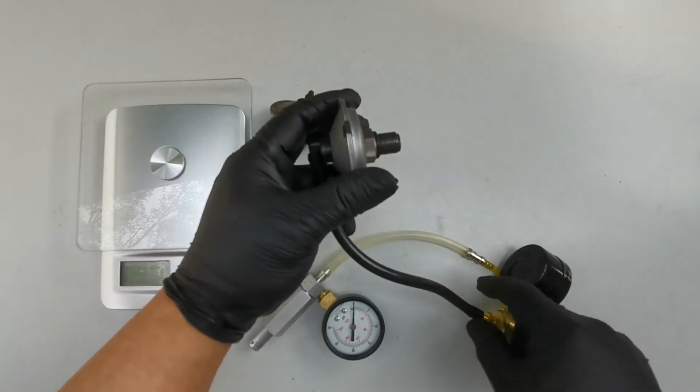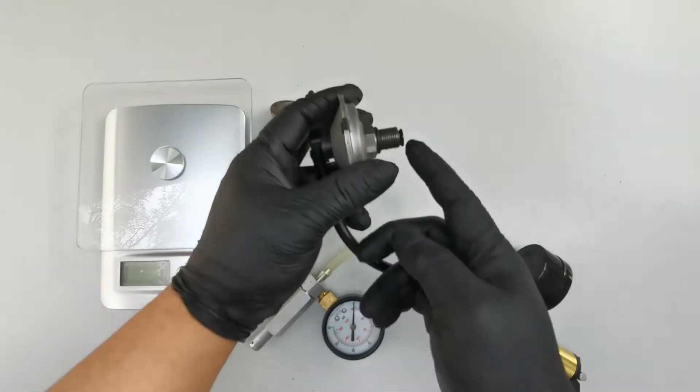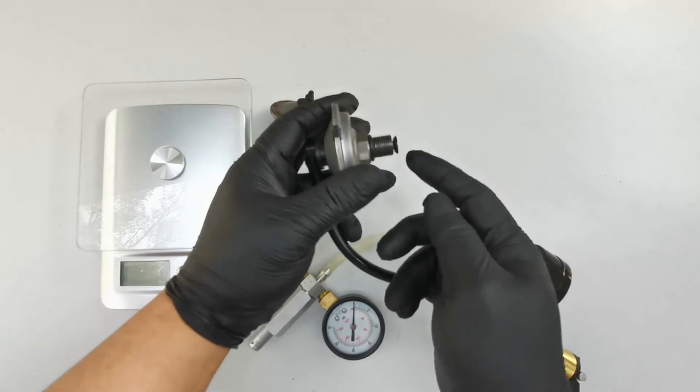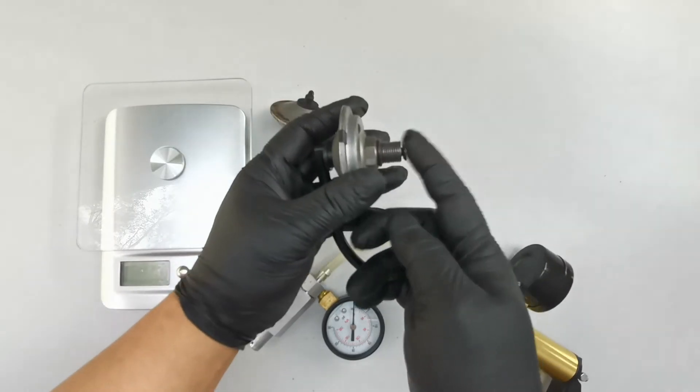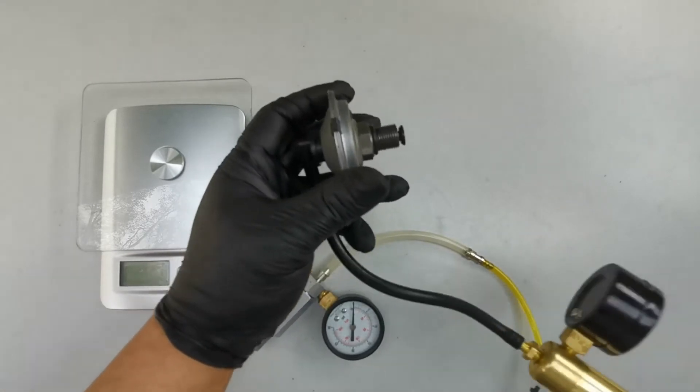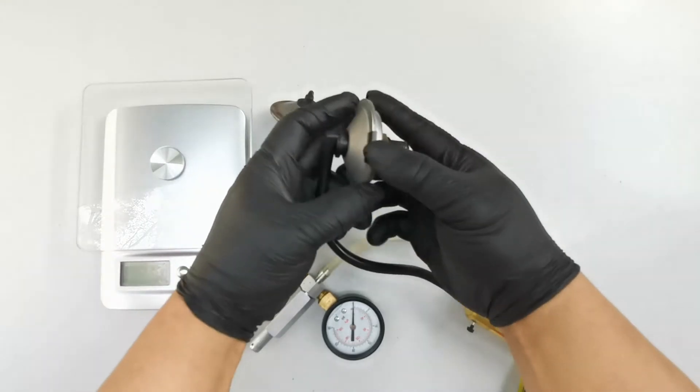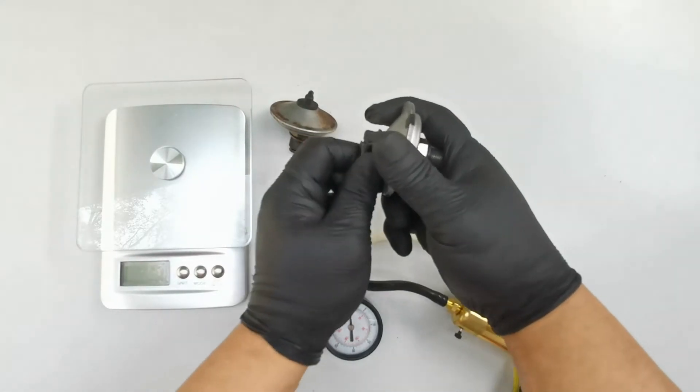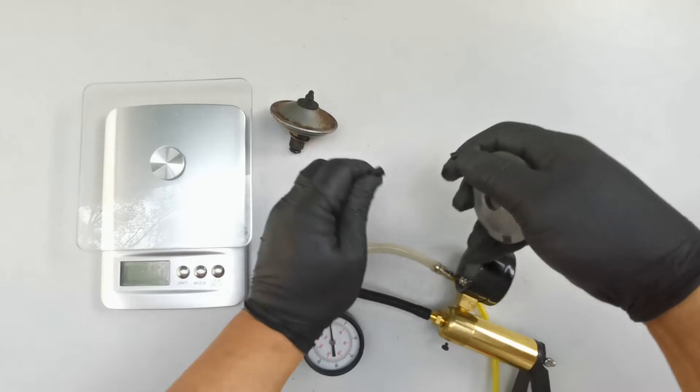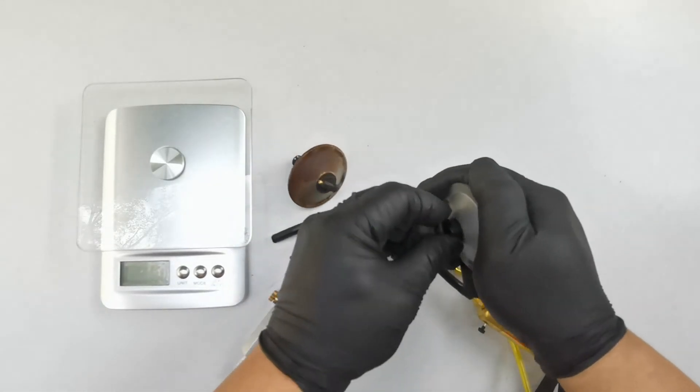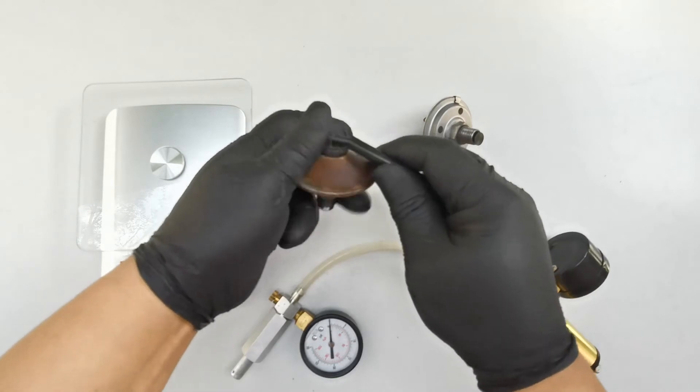Some people attach the pipe and suck from the end of the pipe with their mouth to see if this one creates a vacuum inside, so you can do that also. So this one is our reference, a new decompression valve, and we'll do it on the other one.